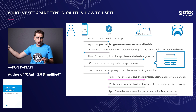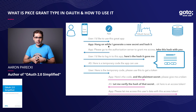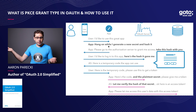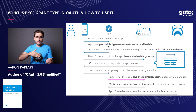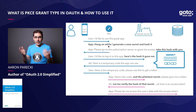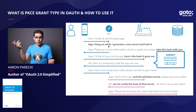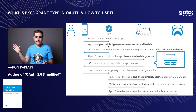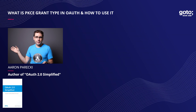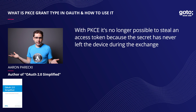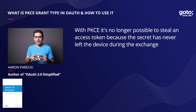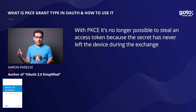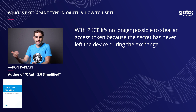That hash is sent out publicly, but then the app has to use that original secret when it goes and exchanges the authorization code. So effectively, without a client secret, an attacker could steal the authorization code returned in the response to get an access token. With PKCE, it's no longer possible to steal it because the secret has never left the device during the whole exchange until it's actually used to get the access token.